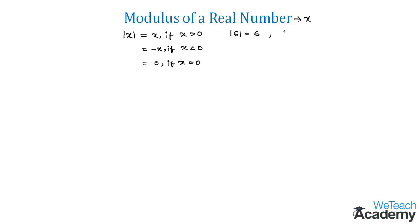For example, mod minus five: since the modulus of any real number is never negative, the value of mod minus five is five. Similarly, the value of minus mod root two would be positive root two.